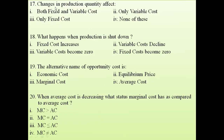Question 17: changes in production quantity are concerned with — both fixed and variable cost, only variable cost, only fixed cost, or none? The answer is only variable cost. Any changes in production — increasing, decreasing, or otherwise — are mostly due to variable cost or variable factors only.